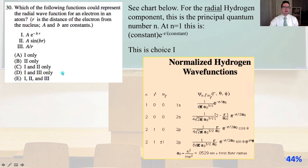Number 30. Which of the following functions could represent the radial wave function for an electron in an atom? R is the distance of the electron from the nucleus A and B are constants. Okay, we're going to see our chart below. Thank you hyperphysics, wealth of knowledge provided there. I use this from their website. And we're going to see that chart below. For the radial hydrogen component, this is the principal quantum number n. At n equals 1, this is a constant times e to the minus r over a constant. And that is again exactly answer A, which is 1 only.